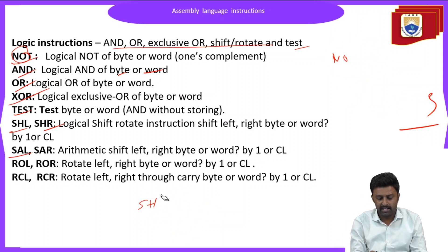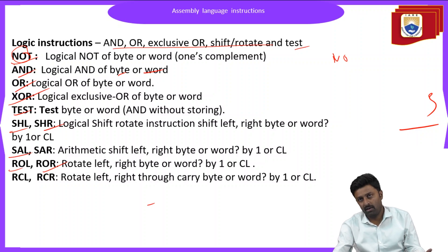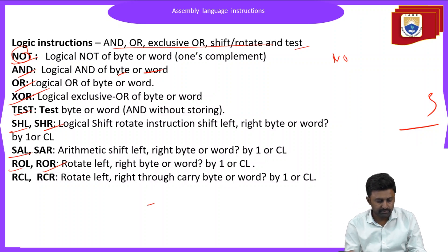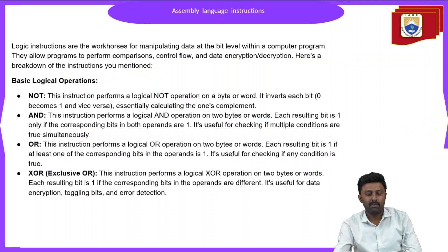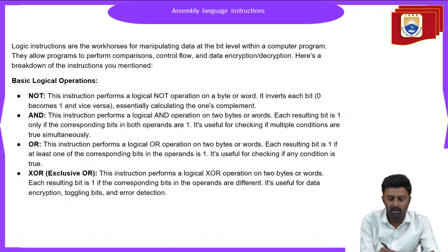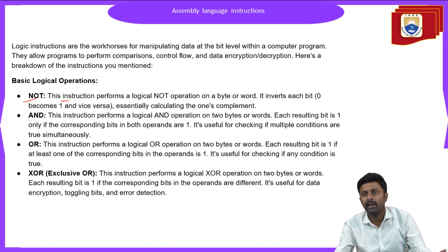We also have SAL and SAR (shift arithmetic left and right) for byte operations. The rotate instructions include ROL (rotate left) and ROR (rotate right) of a byte or word, and RCL (rotate left through carry) and RCR (rotate right through carry) for byte operations. The NOT instruction performs a logical NOT operation on a byte or word, inverting bits from 0 to 1.